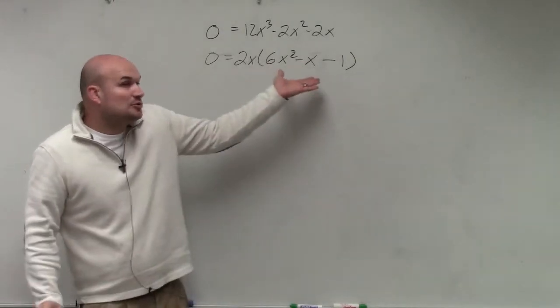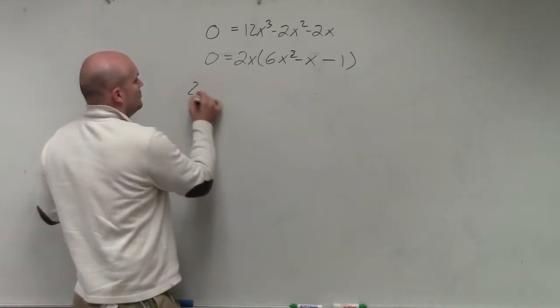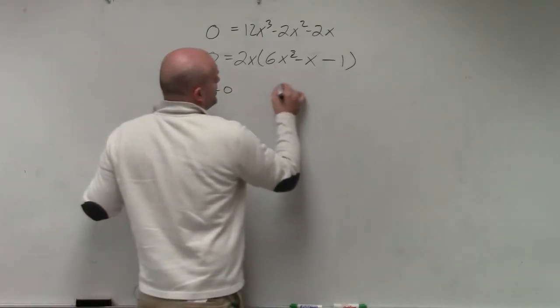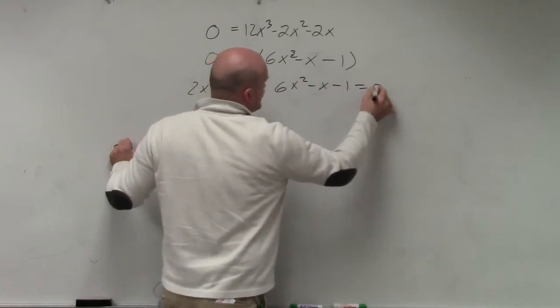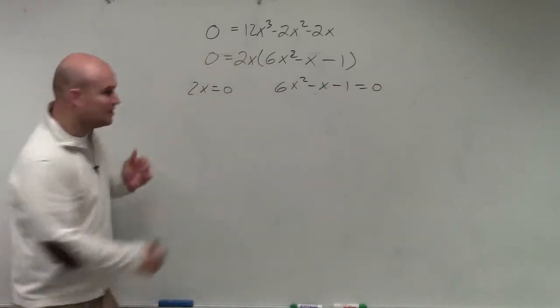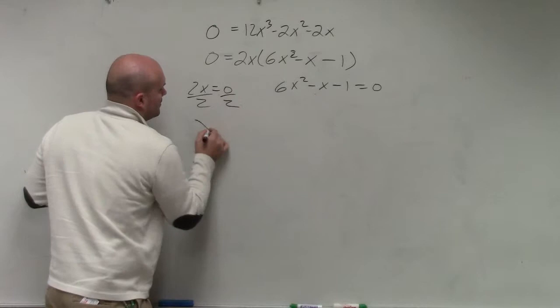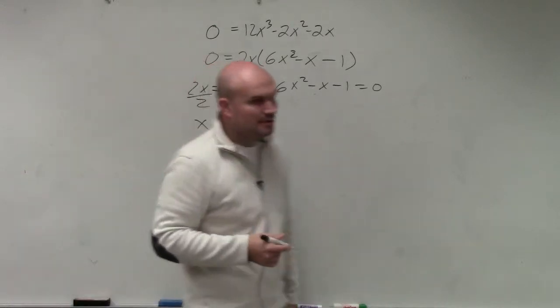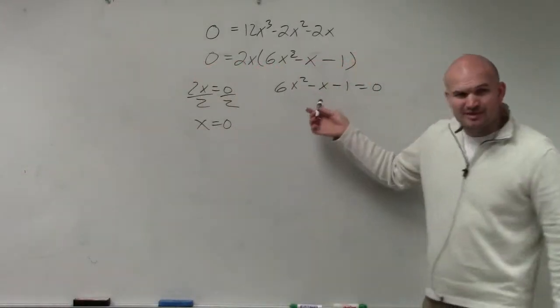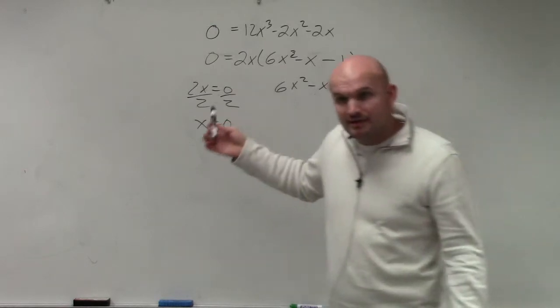Well, now I know I could apply the zero product property, right? You could say, oh, 2x equals 0. Or 6x squared minus x minus 1 equals 0. Well, this one's easy to solve. You just divide by 2. x equals 0. But this one's a little bit more difficult, because this is a what? A quadratic, right?